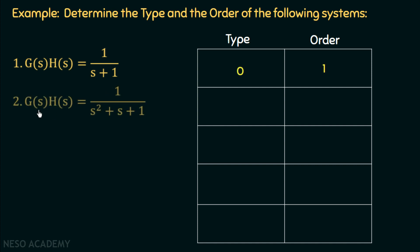Example 2: G(s)H(s) = 1/(s²+s+1). The type is zero because factorizing this quadratic will not yield any pole at the origin. The order of this system is two because the highest power of s in the transfer function is 2.